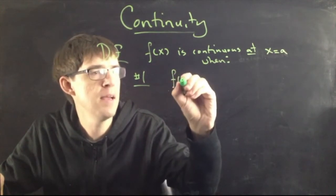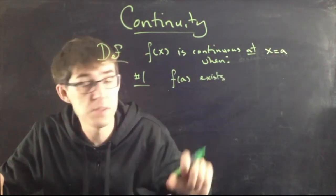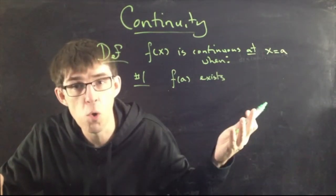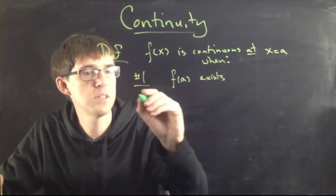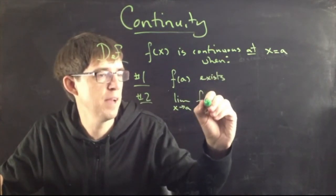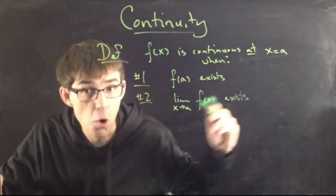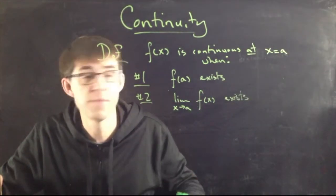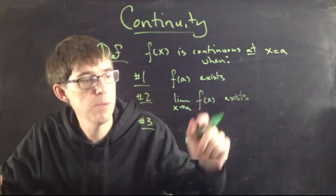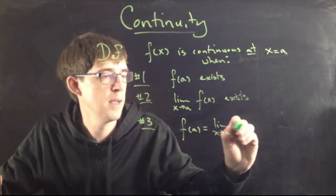Continuous at x equals A when three things must be true. Number one: f(A) exists — that is, there is actually a Y value at that particular point. If there was no Y value there, there'd be a hole in the function, which means it's not continuous. Condition number two: the limit as x approaches A of f(x) exists. The way you should think of this is that the curve actually goes somewhere near that point x equals A. And number three: these two things must be equal to each other. So f(A) equals the limit as x goes to A of f(x).